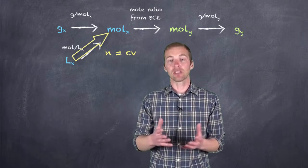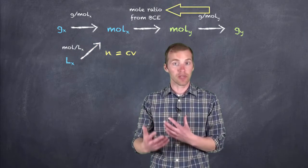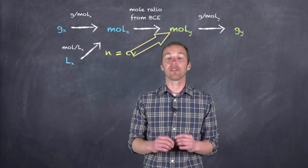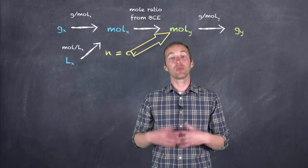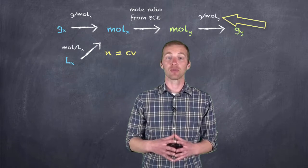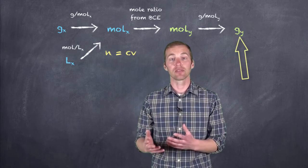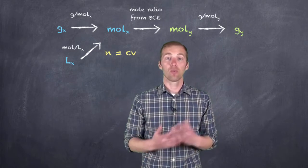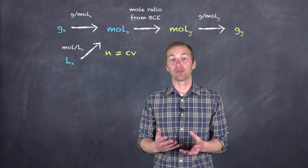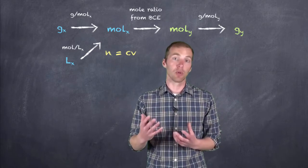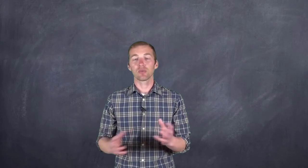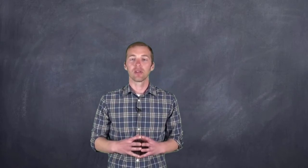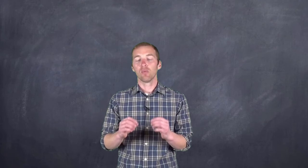Once we figure out the number of moles of the solution we're given, we can then use the balanced chemical equation and the mole ratio to figure out the number of moles of whatever it is we're looking for. Then in most cases we'll use the molar mass of whatever we're looking for to figure out its mass. So instead of mass to moles, moles to moles, moles to mass — we're going from volume to moles, moles to moles, and moles to mass. There is really just one little tweak in this process.